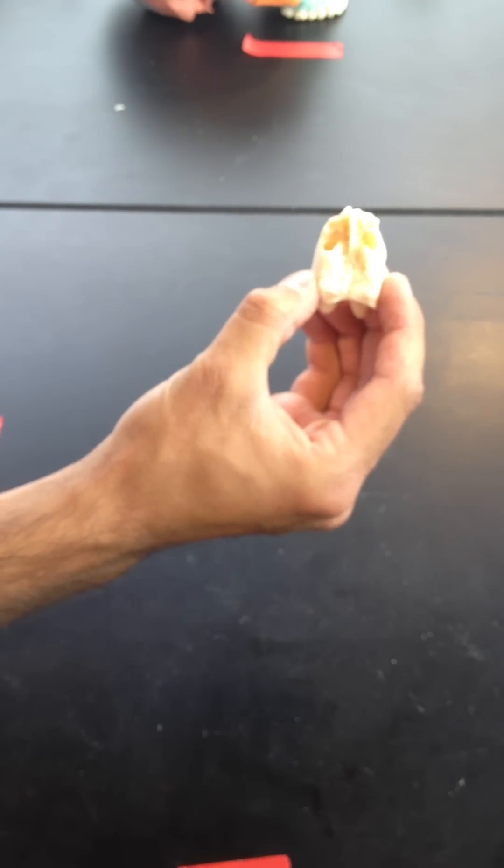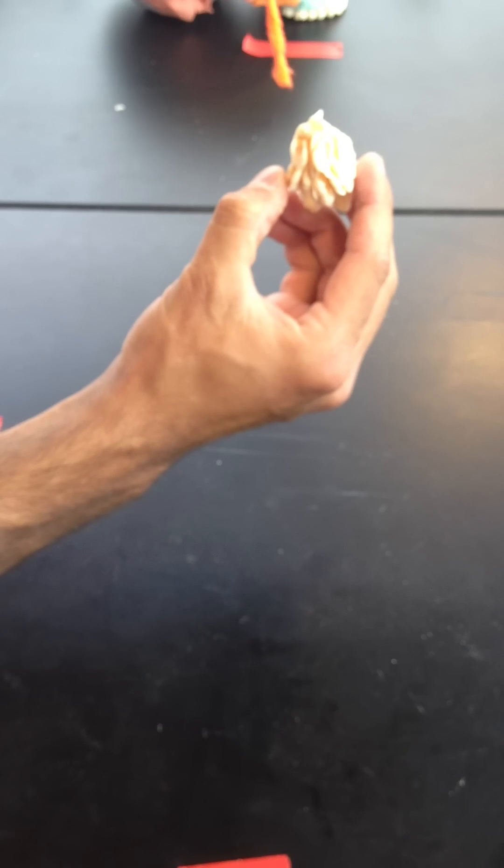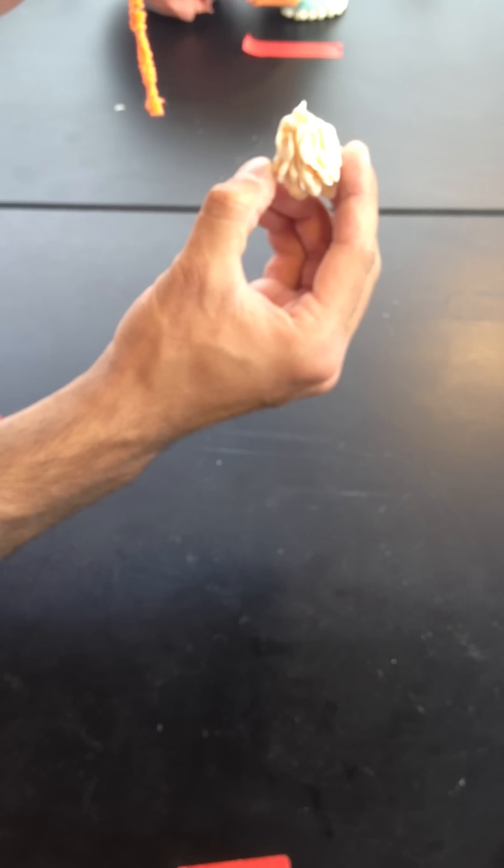And then we have the perpendicular plate. When you're looking anterior, the perpendicular plate runs here. It actually meets with the vomer, and we'll talk about that a little later.